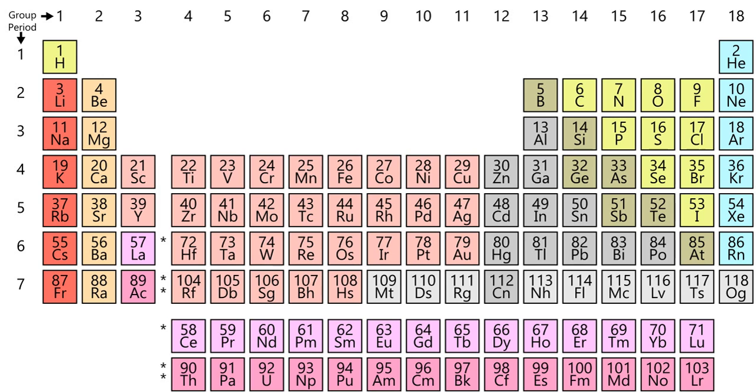In chemistry, a group is a column of elements in the periodic table of the chemical elements. There are 18 numbered groups in the periodic table, and the f-block columns are not numbered.